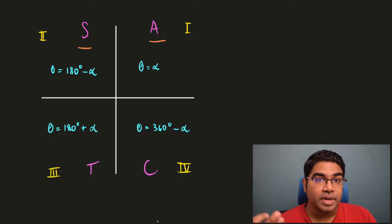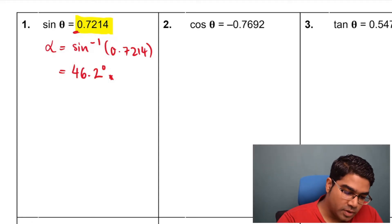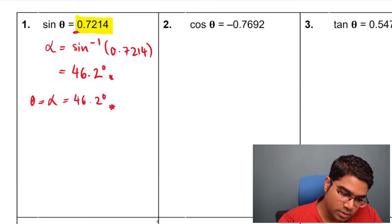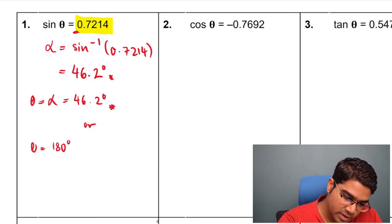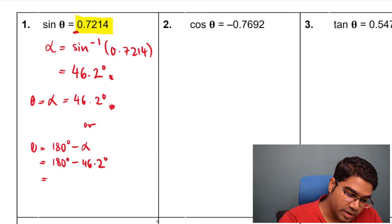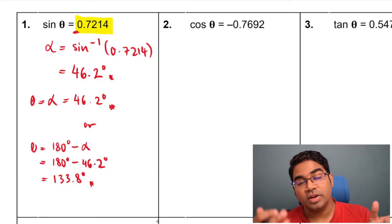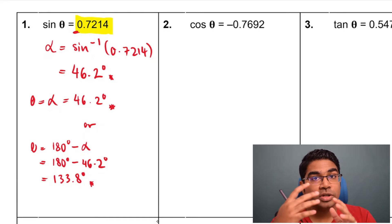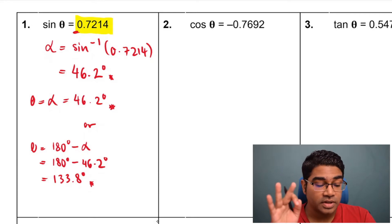Since sine theta is positive from our question, we know it has to be situated in either quadrant 1 or 2. There are two possible answers. If it was in quadrant 1, then theta equals alpha, which is 46.2 degrees. Or if it were in quadrant 2, theta would be 180 degrees minus alpha, which is 180 minus 46.2 degrees, giving 133.8 degrees. You can verify by keying sine 46.2 and sine 133.8 into your calculator.